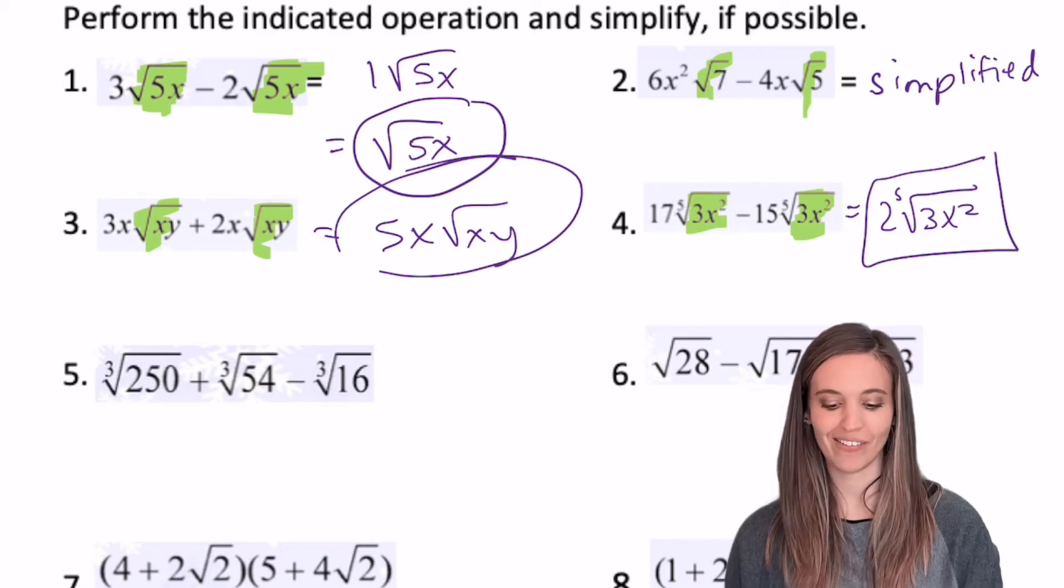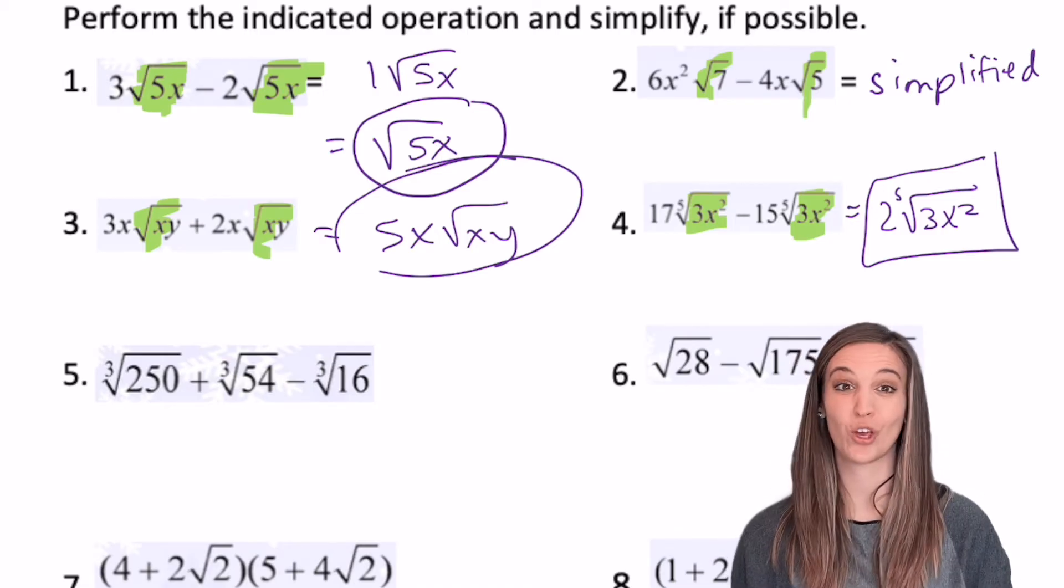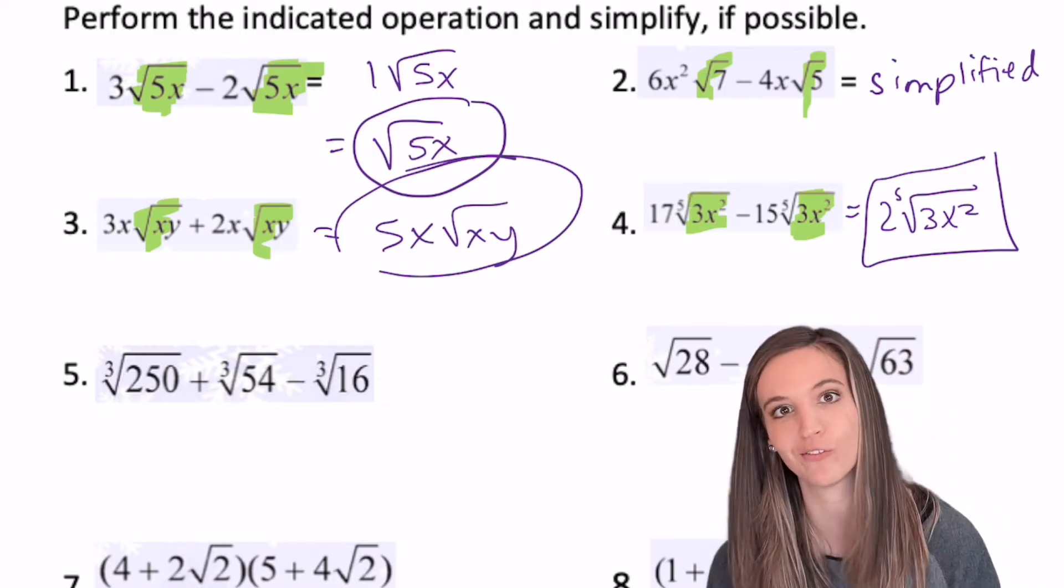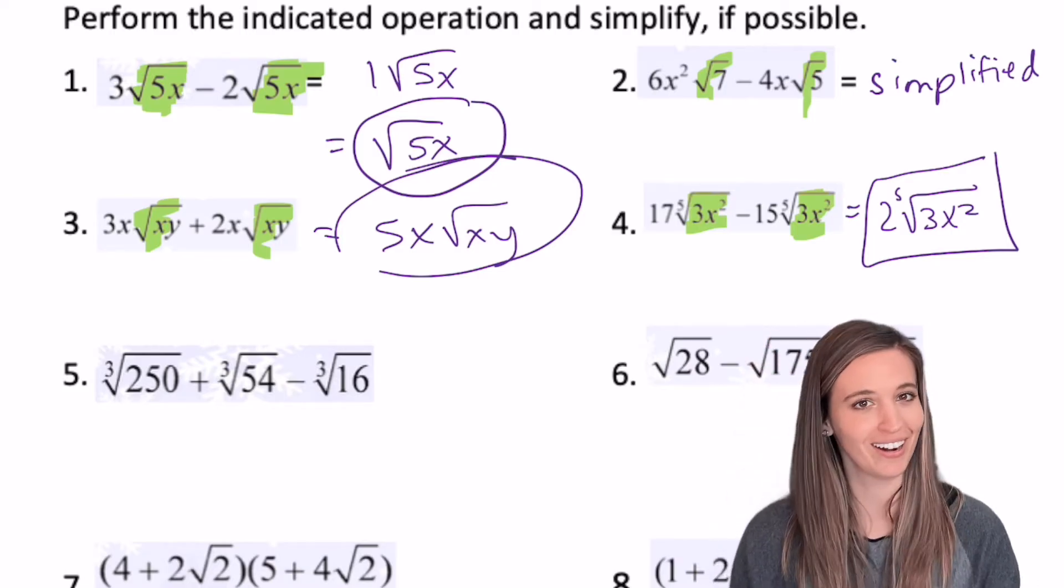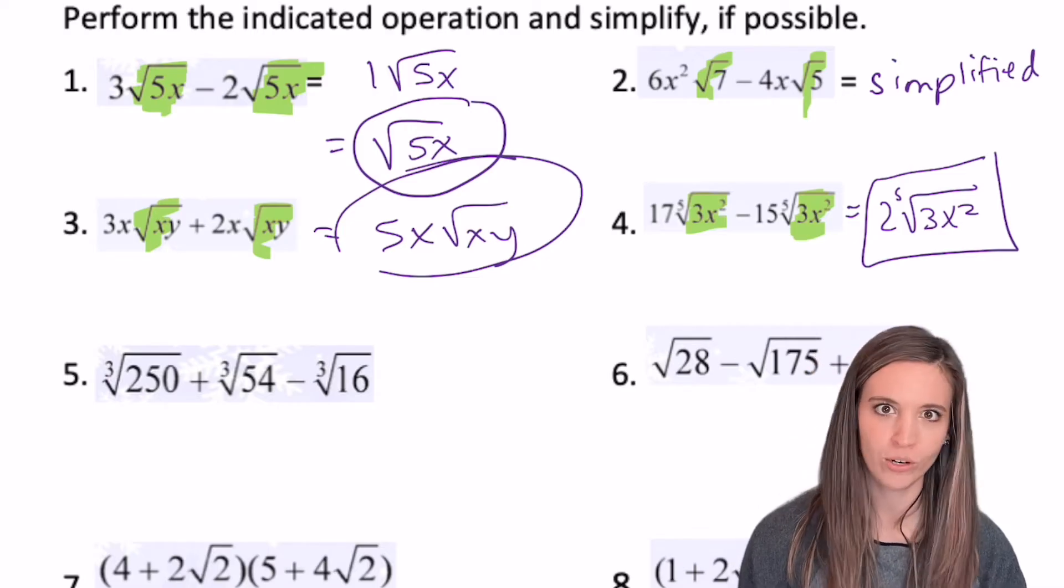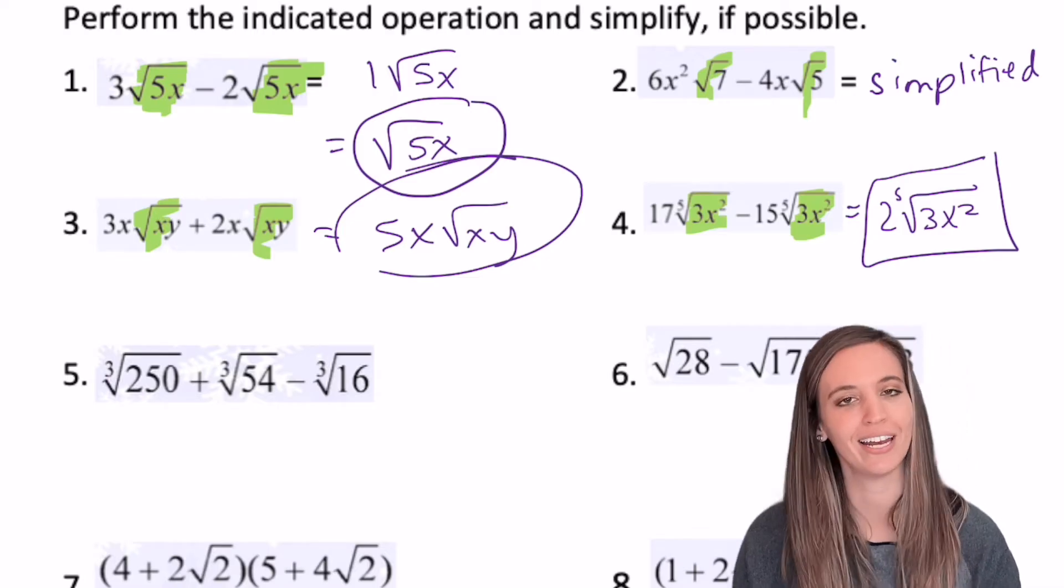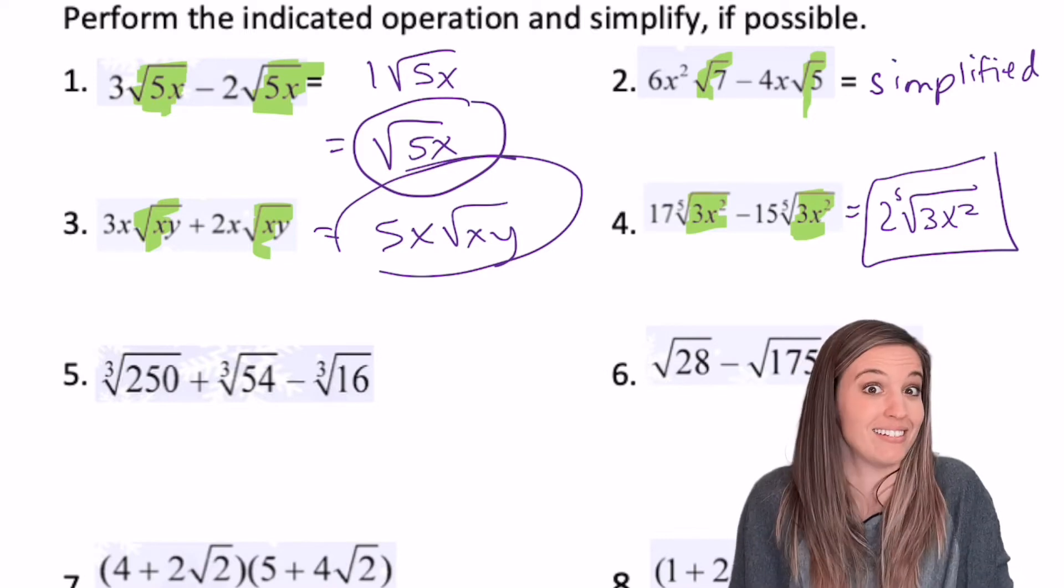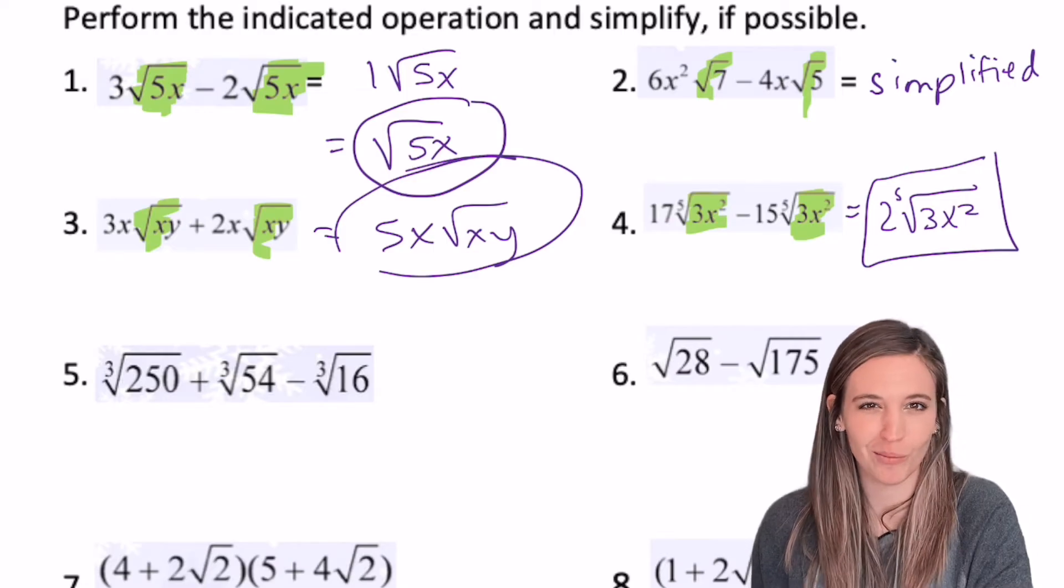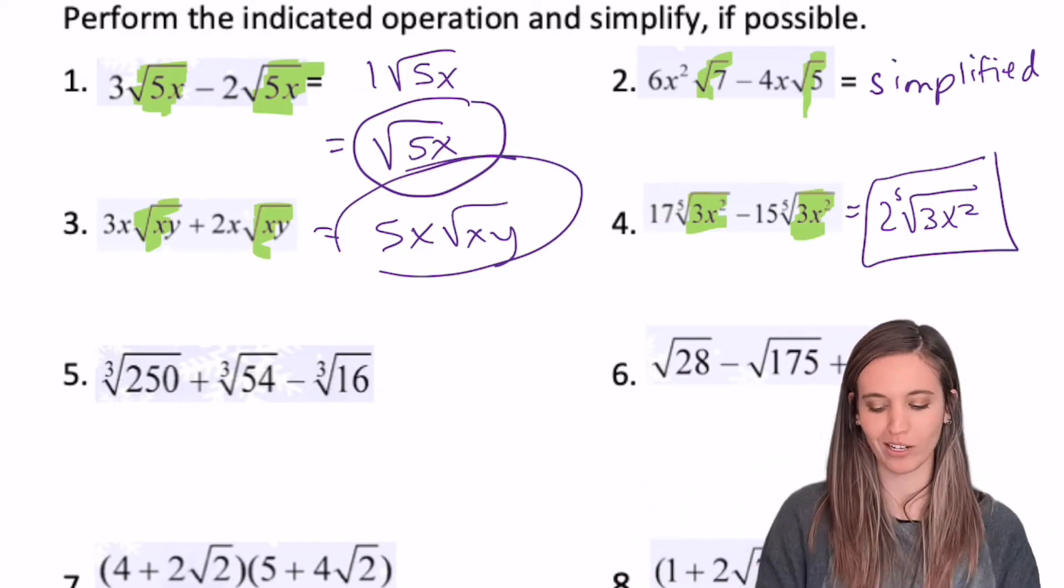Now, as I look at number 5, I have the cube root of 250 plus the cube root of 54 minus the cube root of 16. Well, none of my radicals are identical, so do I have to add them together? I could totally simplify these. So I need to go ahead and try to simplify, then maybe they will add together. Mrs. Spirit taught me I could always start with the smallest radical because then that can kind of give me hints for the other ones.